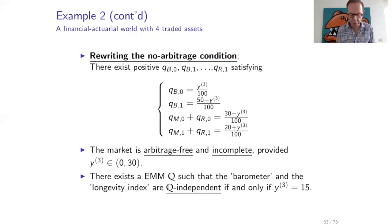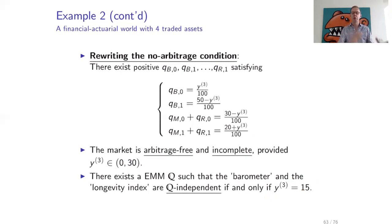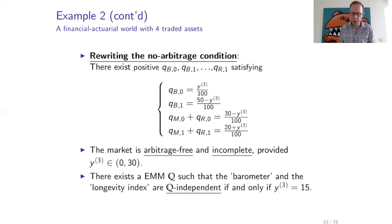We can also prove that there exists an equivalent martingale measure Q such that the barometer and the longevity index are Q-independent if and only if y3 is 15. So while we assumed P-independence under the real-world measure P, this does not automatically imply Q-independence. It only implies Q-independence if and only if the price of the third asset equals 15. Try to prove this yourself.